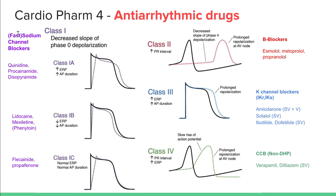Class one drugs are fast sodium channel blockers — they block sodium entry in phase zero, giving a decreased slope of phase zero depolarization. There are three subclasses: 1A, 1B, and 1C. A mnemonic: 'I want a quarter pound' — quarter pound is quinidine and procainamide (class 1A); with lettuce and mayo is lidocaine and mexiletine (class 1B); and fries and Pepsi on the side is flecainide and propafenone (class 1C).